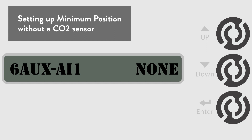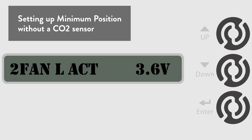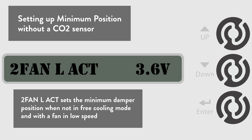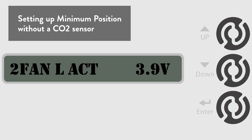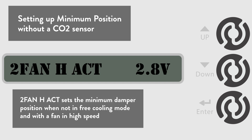Go to the 2-fan LACT menu. This will set the economizer actuator voltage or damper position for allowing minimum position outside air intake when the unit is in low fan speed. The default is 3.6 volts, but for this example we are going to change this to 3.9 volts. Now go to the 2-fan HACT menu. This will set the economizer actuator voltage or the damper position for allowing minimum position outside air intake when the fan is in high speed. The default is 2.8 volts, but for this example we are going to change it to 3.0 volts.